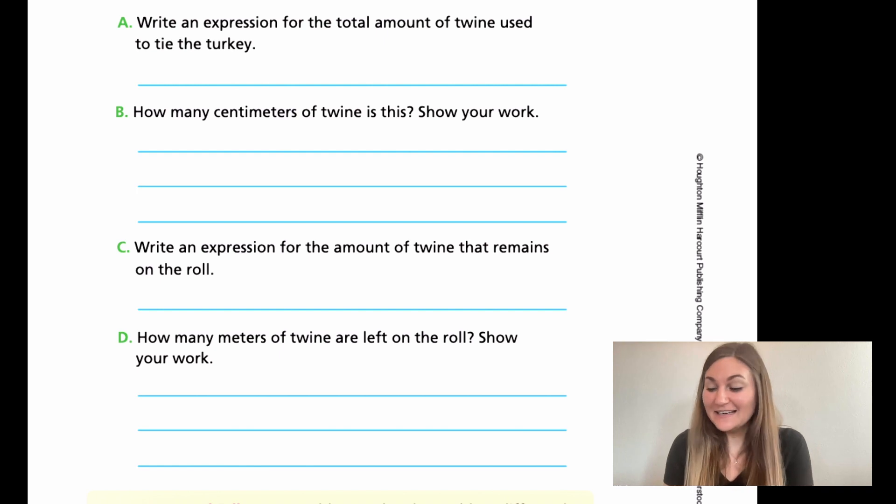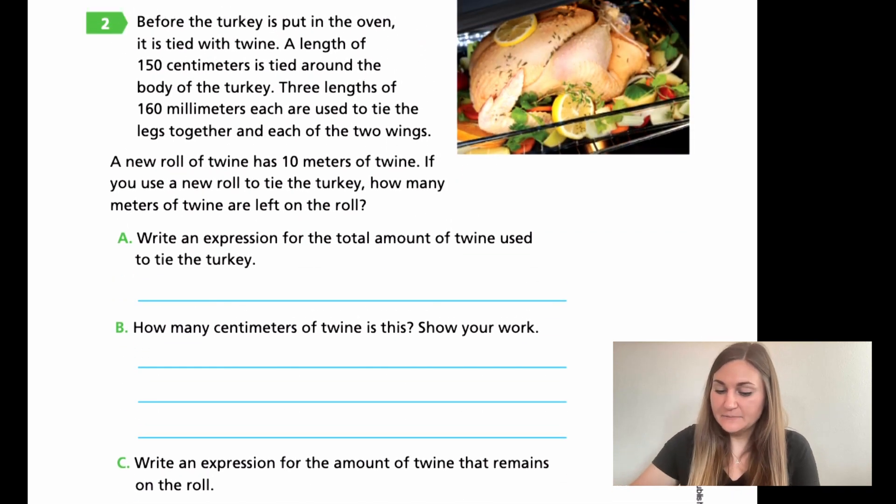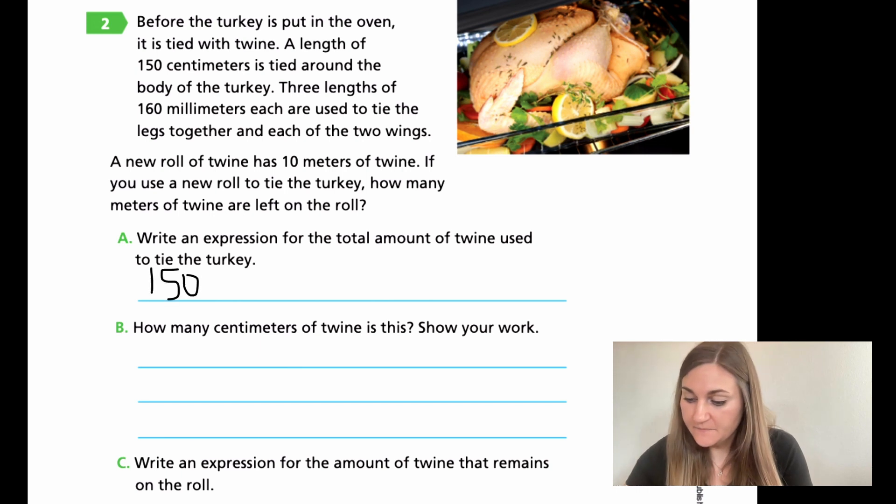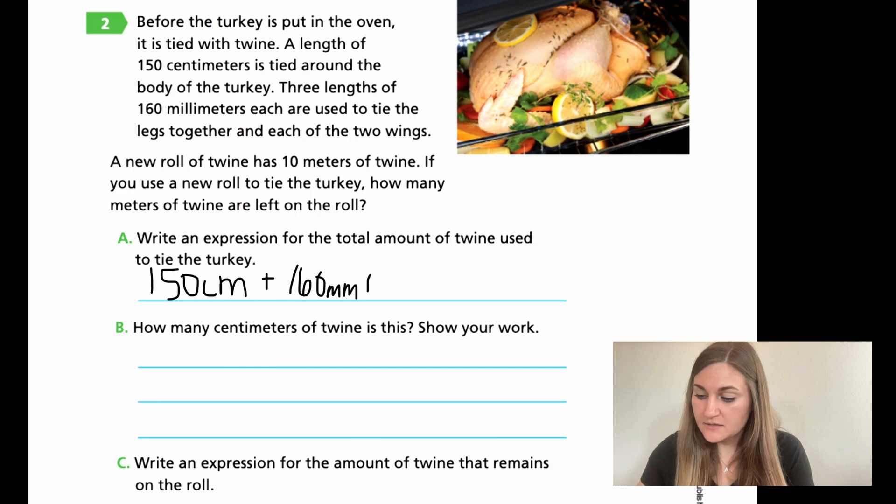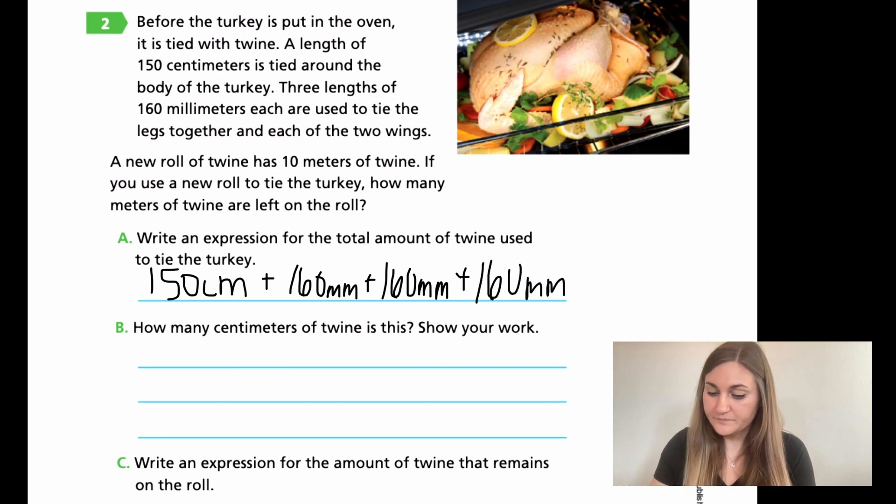All right, great work. Let's go ahead and solve this together. So for A, I know the original was 150 centimeters. And then I had three of those 160. So all I'm going to write is that three times. So plus 160 millimeters. That was once. Twice. And there's my third one. So that would be my equation. Just the original numbers that they gave me. And I'm adding them all together.